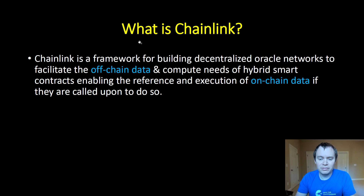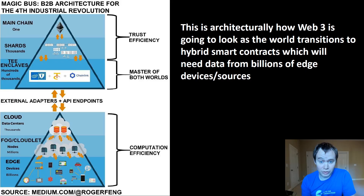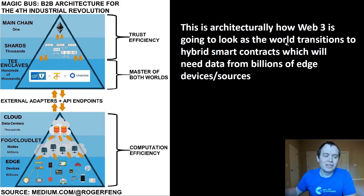Going back to the definition, Chainlink is a framework for building decentralized oracle networks involving two specific things: off-chain data and on-chain data. This diagram shows how Web3 is going to look architecturally as the world transitions to hybrid smart contracts, which will need data from billions of edge devices and sources. We've talked about sharding before when discussing Ethereum — what sharding is, why you'd use it, and how it fits into Web3 architecturally.